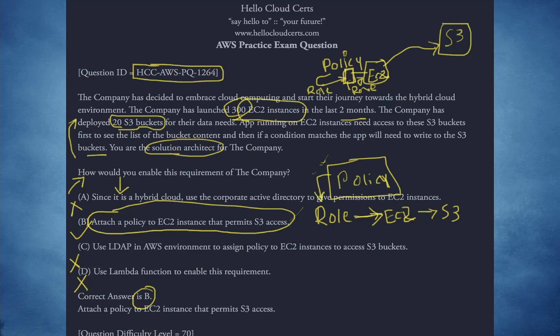The role is applied to the EC2 instance while building the server instance, and that gives it access to S3. All the credentials are created on the fly by IAM and given to EC2, and EC2 passes them on to S3. S3 validates and says you have the access. That's how access works between EC2 and S3. This is a classic example of using roles on a server — that's the connection between roles, policies, EC2, and S3.